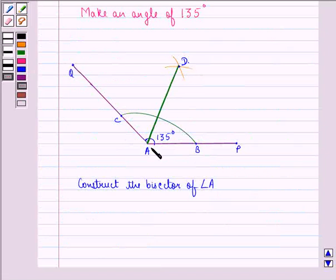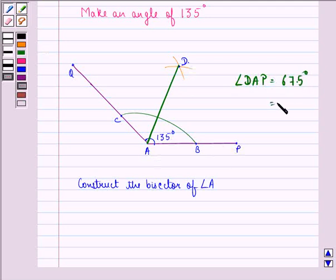Then, we see that line segment AD becomes the bisector of angle A. Because, when we measure angle DAP, it comes out to be 67.5 degrees. That is, half of 135 degrees.